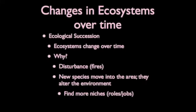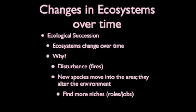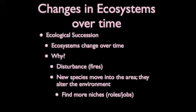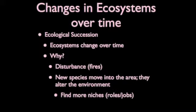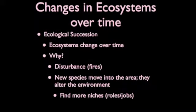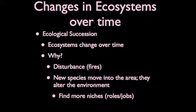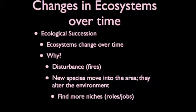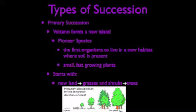The ecosystem changes over time with a process known as ecological succession. Why might this happen? This could happen because of things we sometimes cannot control — for example, a disturbance like a fire, or a new species that decides to move into the area, like love bugs, which alter the environment. There are two types of succession: primary succession and secondary succession.